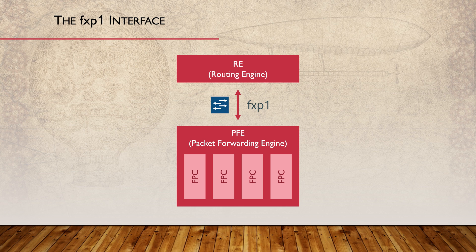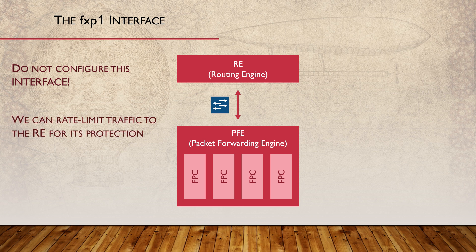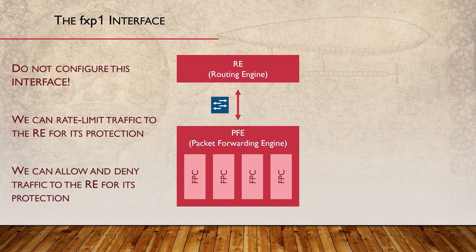Don't get these mixed up with FXP0, which is a management interface. We do not need to configure FXP1 at all — no IP addresses, unit numbers, families, or any of it. This is all managed internally by Junos. This link has a built-in rate limiter, which limits how much traffic can be pushed from the PFE to the RE. This limiter is here as a protection against denial of service attacks. We can't configure the rate limiter ourselves. However, we can create our own firewall filter to further limit traffic to the RE. For example, we might apply a filter to allow BGP traffic from known peers, but deny BGP traffic from any other peer. We'll take a look at firewall filters in video 18.